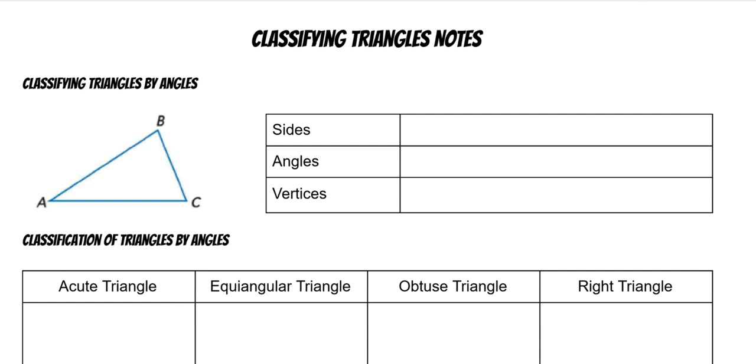If we're looking at the sides of this triangle, all the sides are AB, BC, and AC. All the angles of the triangle are angle A, angle B, and angle C. And then my vertices are all of the angles which are A, B, and C.